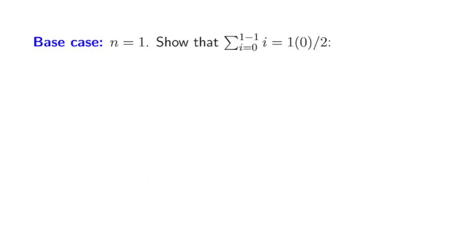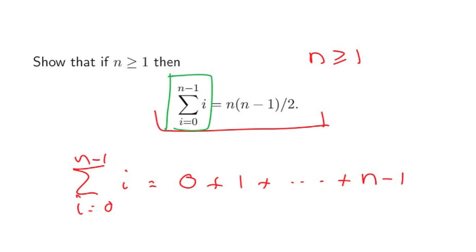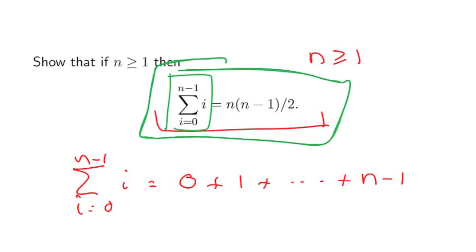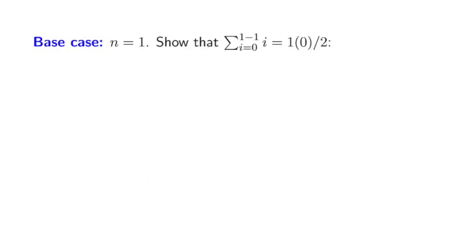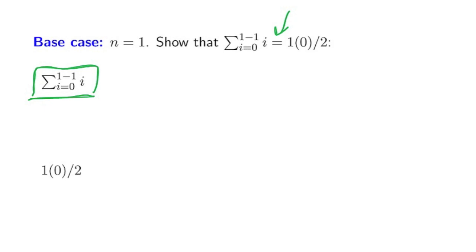How do you prove this? Well, you start with the base case. You set n equals 1 and you state what it is that you need to show. What you need to show, you get from simply taking this expression and plugging in n equals 1. This is what you get — write it down. I like to state what I have on the left of this equality and where I would like to get, so I can keep my eye on where we need to go.